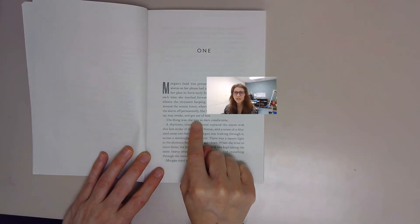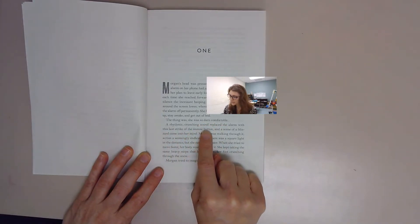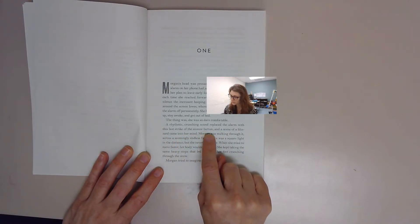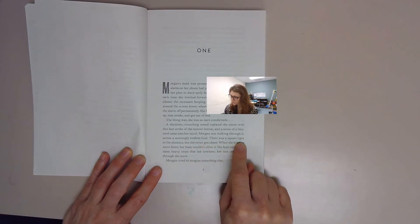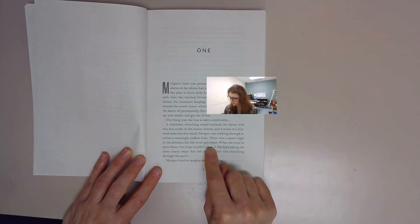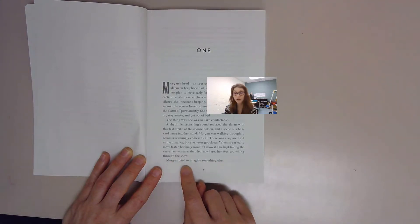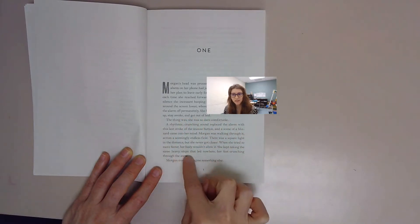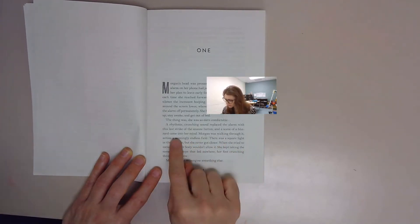The thing was, she was so darn comfortable. A rhythmic crunching sound replaced the alarm with this last strike of the snooze button, and a scene of blizzard came into her mind. Morgan was walking through it across a seemingly endless field. There was a square light in the distance, but she never got closer. When she tried to move faster, her body wouldn't allow it. She kept taking the same heavy steps that led nowhere, her feet crunching through the snow.